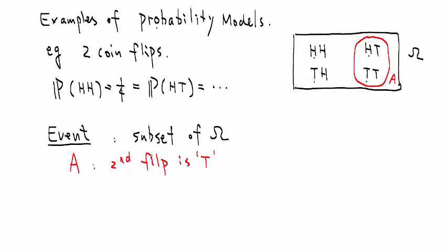Let's define another event. Event B. At least one of the flips is a head. We'll look at these outcomes. Which outcome has at least one of them as a head? You can see these three outcomes are satisfied. So this set of outcomes is what we call B.